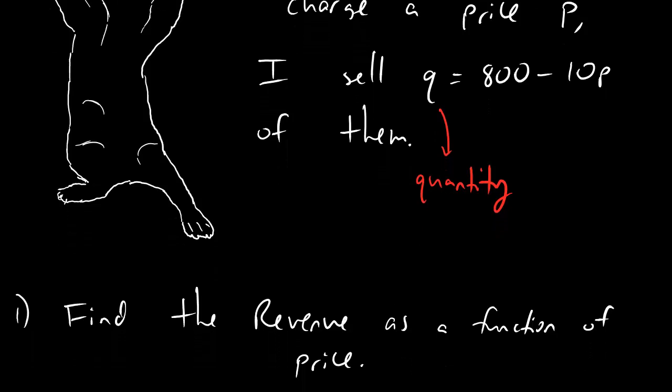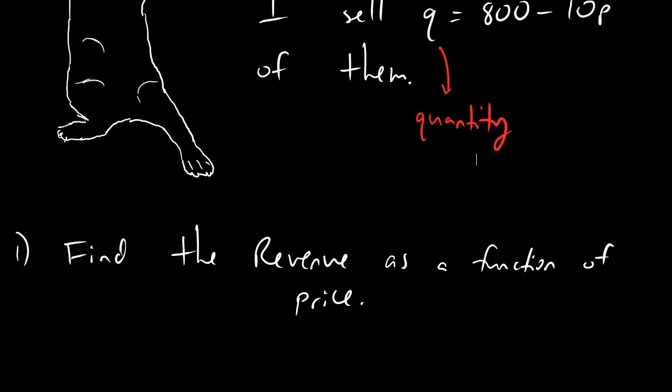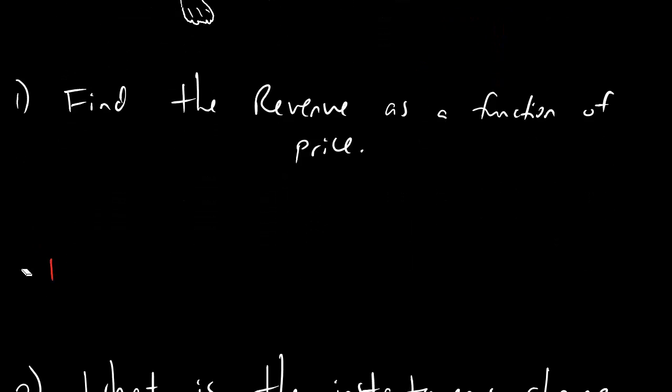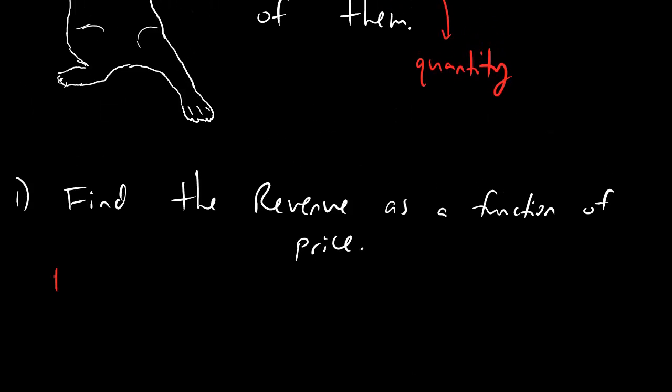The first question is find the revenue as a function of price. Before you do anything else, you should remember that revenue equals price times quantity, and whenever you're asked to find a revenue function, you're always going to be keeping one of these the same. You'll have a variable for price and plug something in for quantity, or you'll have a variable for quantity and plug something in for price.